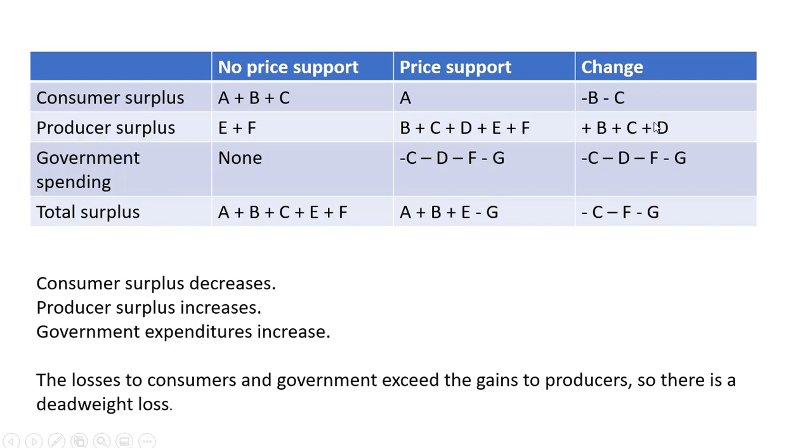We see this is a net outflow of expenditures here for the government. So we have minus signs here. So adding up the changes, it is negative. So there is a deadweight loss. Total surplus has shrunk.